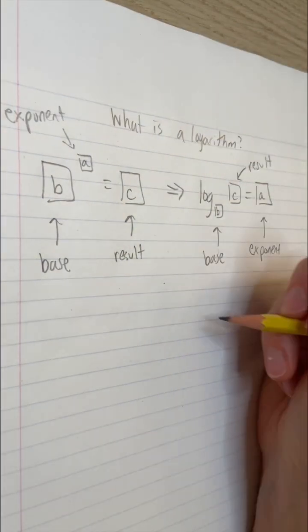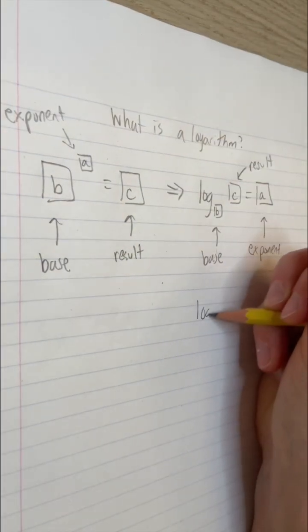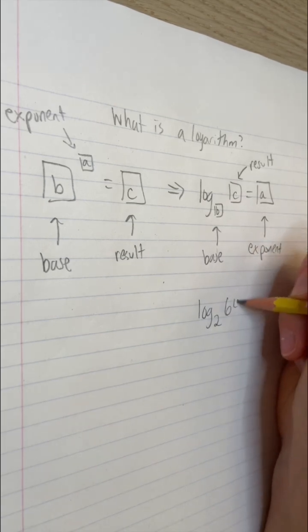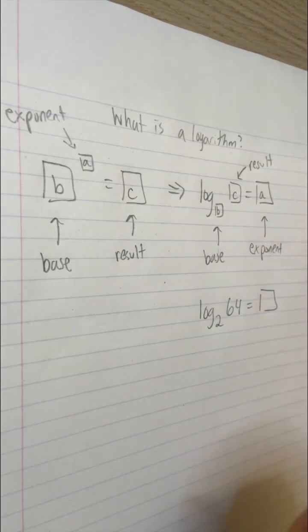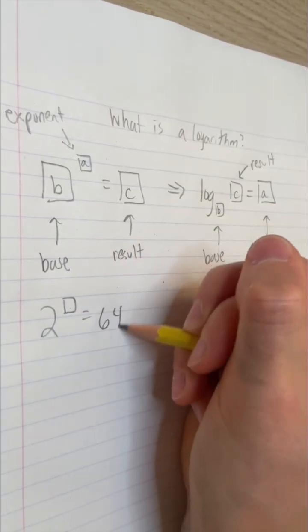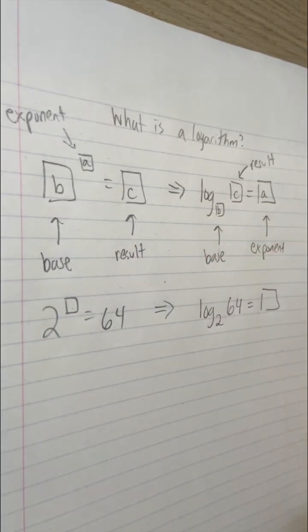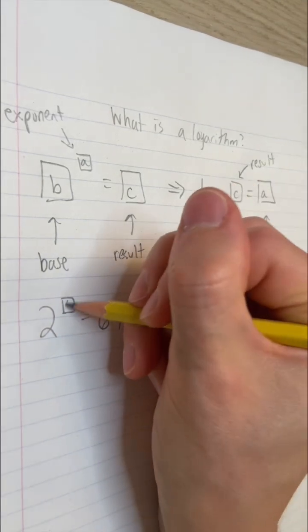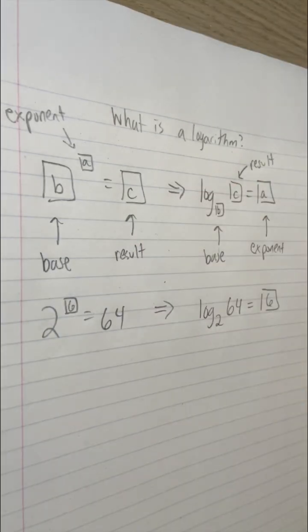Now let's do an example. Something like log base 2 of 64 asks the reader, hey, 2 to the power of what exponent gets me 64? And what is that exactly? 6. 2 to the power of 6 is 64. Therefore, log base 2 of 64 is 6.